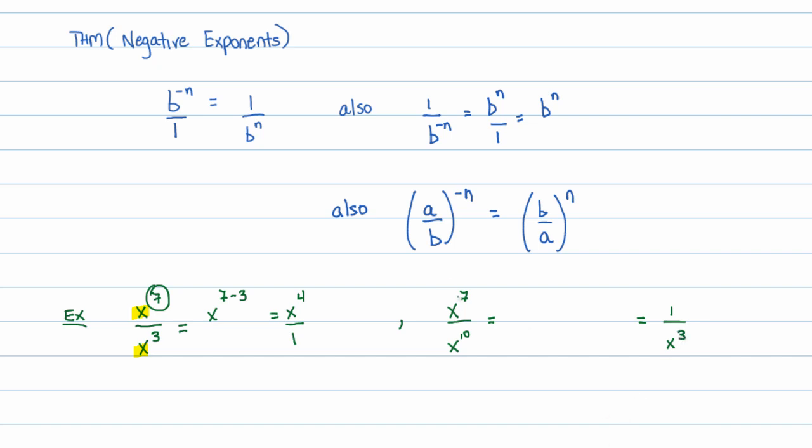If you look at this, this would be 7 x's multiplying on top, and there would be 10 x's multiplying on bottom. And if you cancel them out, you'd have 3 left over. In fact, I'll show you that. 1, 2, 3, 4, 5, 6, 7 on top. And then 1, 2, 3, 4, 5, 6, 7, 8, 9, 10 on the bottom.